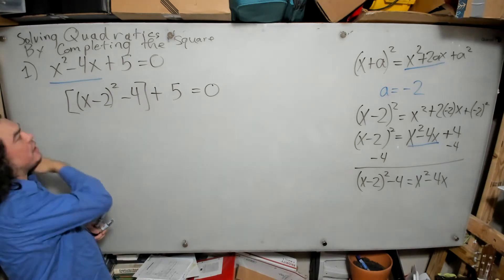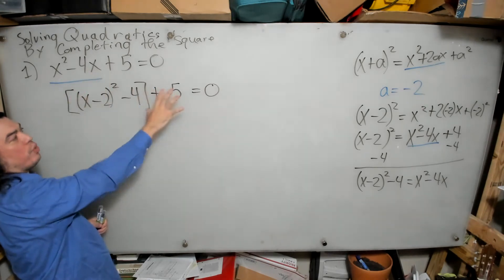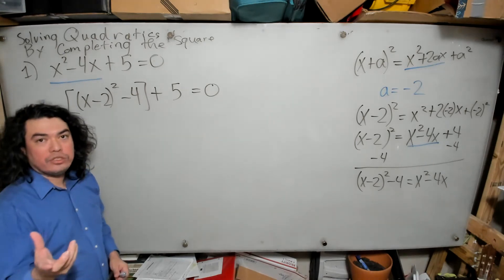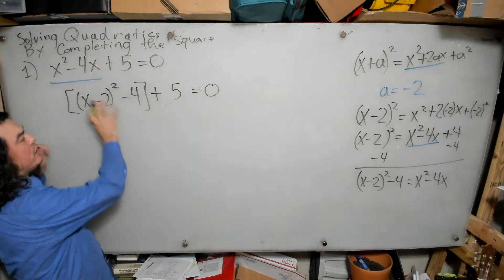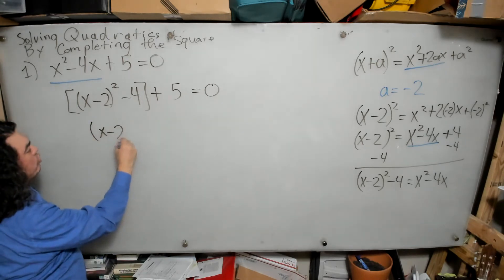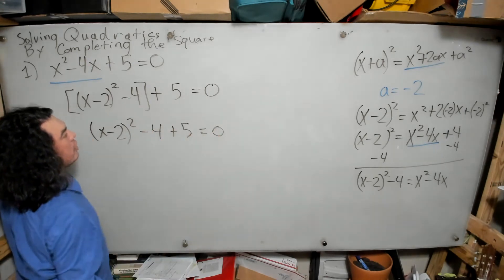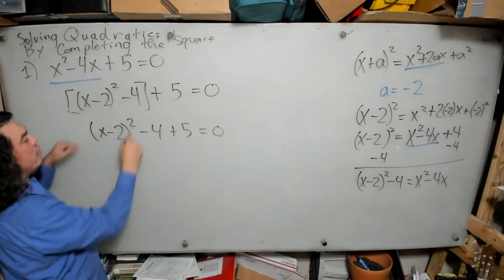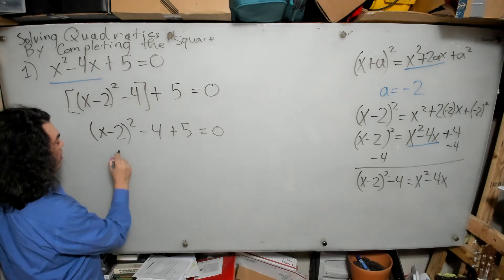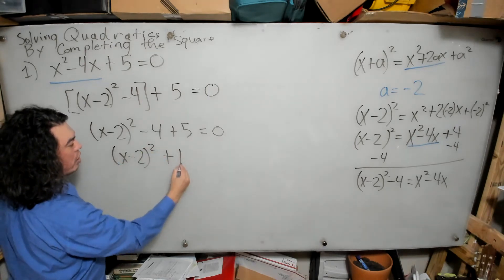Completing the square lets me replace the square term and the linear term with just one square term, which is crucial for solving for x. Removing the parentheses gives x minus 2 squared minus 4 plus 5 equals zero. Combining like terms, negative 4 plus 5 is positive 1, so the equation becomes x minus 2 squared plus 1 equals 0.